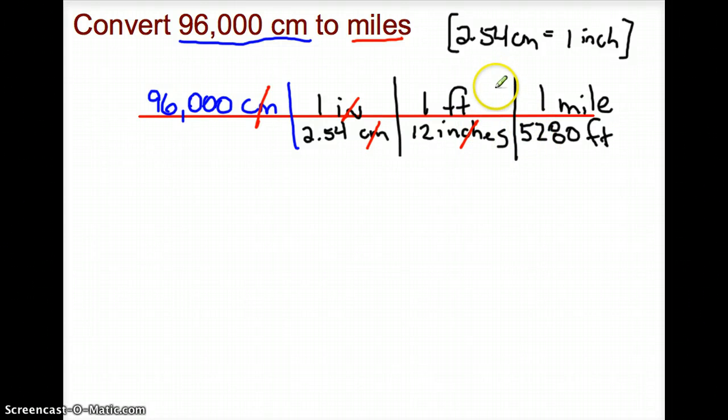Divided by 2.54, divided by 12, divided by 5,280. A common mistake for kids to make is to type into their calculators 96,000 times 1 times 1 times 1 divided by 2.54 times 12 times 5,280. That's incorrect and will give you the wrong answer.